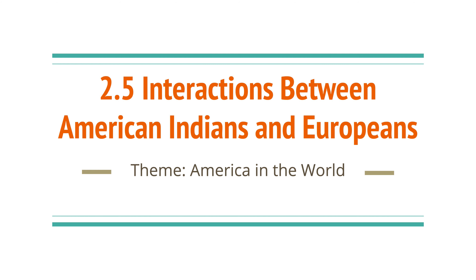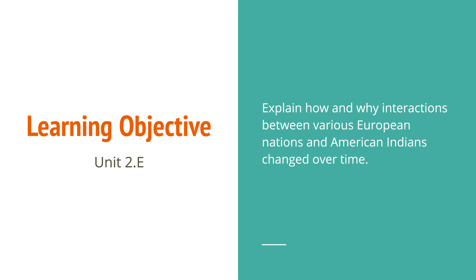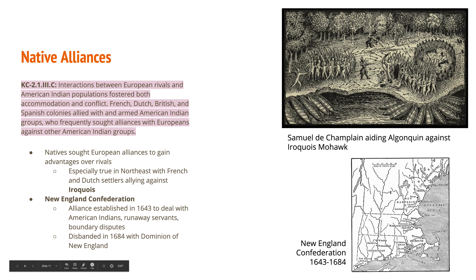Moving on to the next topic: 2.5, interactions between American Indians and Europeans. Our theme here is America in the World — how the British colonies were interacting with other nations. The learning objective is to explain how and why interactions between various European nations and American Indians changed over time. The first key concept is that interactions between European rivals and American Indian populations fostered both accommodation and conflict.